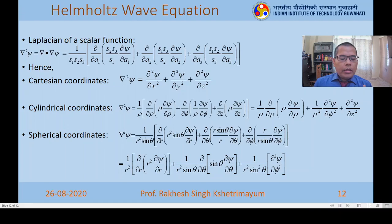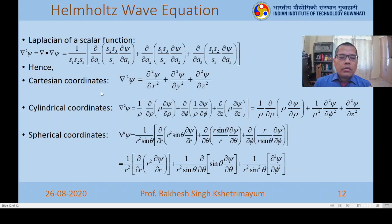We now have the Laplacian in cylindrical and spherical coordinate systems. Once we have this, we can solve the wave equation in cylindrical and spherical coordinate systems to find what kinds of waves we get. We have already found the wave equation solution for Cartesian coordinates, which turned out to be plane waves. We will see the solutions for cylindrical and spherical coordinates in the next class. That's all for this class—I hope to see you in the next class.